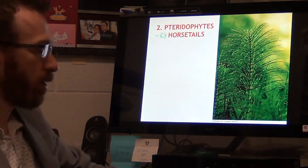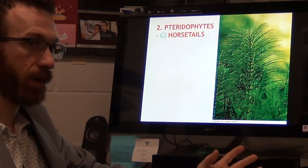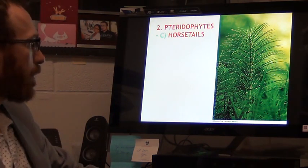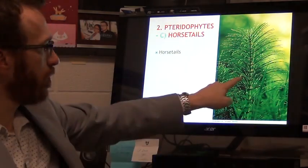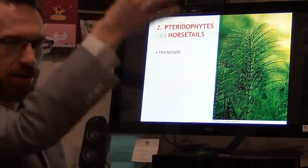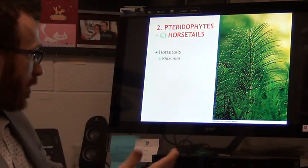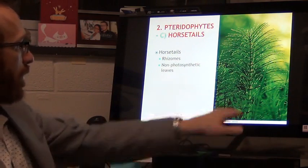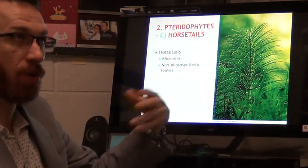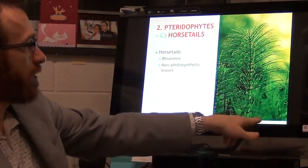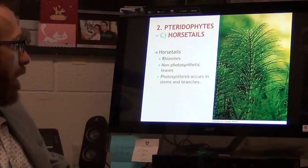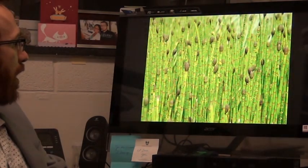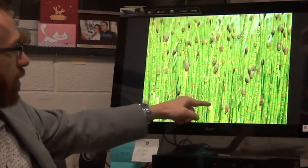Our last group, our last pteridophyte group, are the horsetails. They're called that because they look like horsetails. Horsetails can look like this, and sometimes they lose these leaves here and just look like a stalk. They also have rhizomes just like the ferns do. These leaves are actually non-photosynthetic—they photosynthesize on the stem just like the whisk fern does. If we look at them in the wild, they look like they have no leaves.